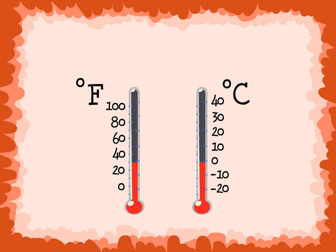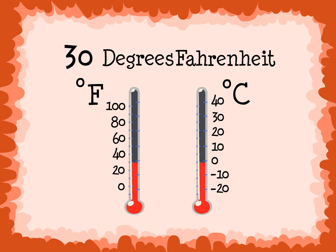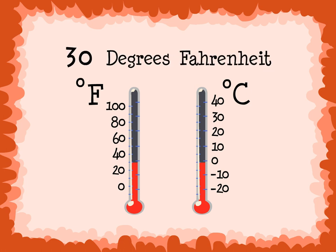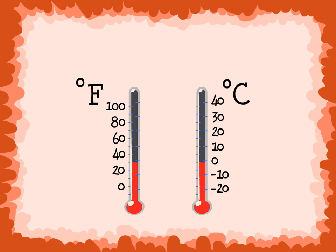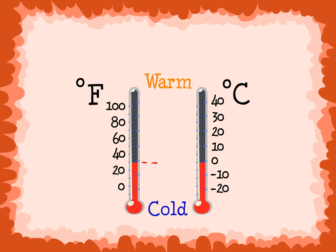The thermometer on the left measures temperature using degrees Fahrenheit — the red is on the 30 degree mark. We would say 30 degrees Fahrenheit. The thermometer on the right measures temperature using degrees Celsius — the red is about on the zero mark. We would say 0 degrees Celsius. In these thermometers we see a small amount of red, so 30 degrees Fahrenheit and 0 degrees Celsius are very cold temperatures. These are temperatures where you could play in the snow, play indoors, and wear coats and pants.